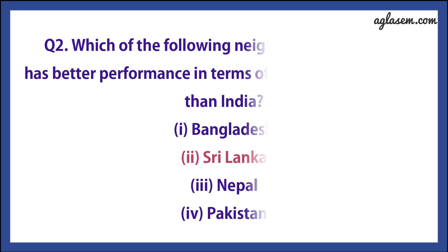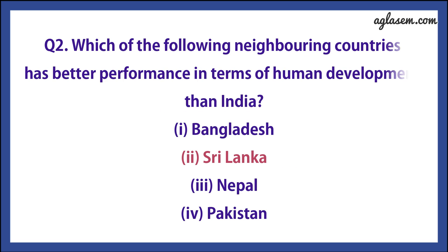Question number 2 says: which of the following neighboring countries has better performed in terms of human development than India? The options are: first, Bangladesh; second, Sri Lanka; third, Nepal; and the fourth is Pakistan. So the answer is second, i.e. Sri Lanka.